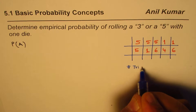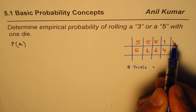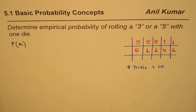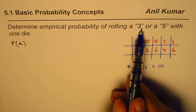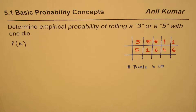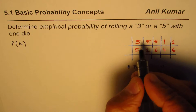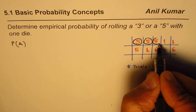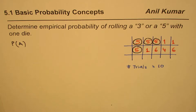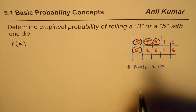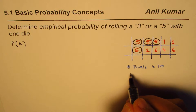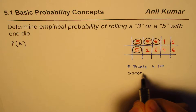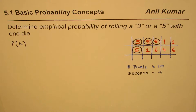So we have 10 trials numbered 1 through 10. What we wanted to determine is the empirical probability of rolling a 3 or a 5. We got some 5s, so let me circle those. We got 5, 5, 5, and 5 — that is 4 favorable outcomes. So the success was 4 times out of 10 trials.